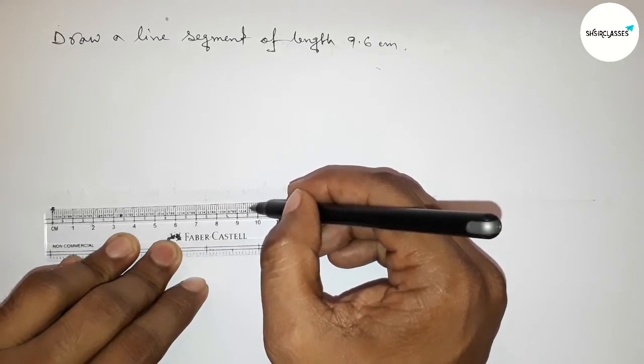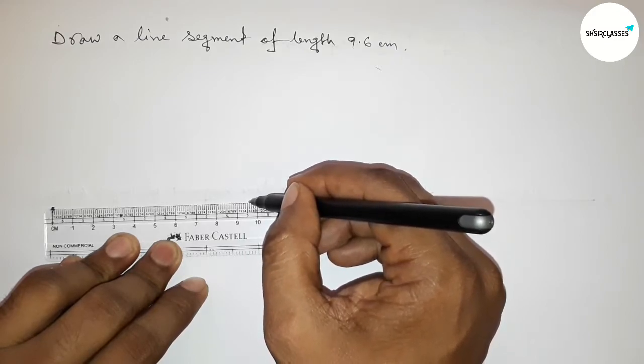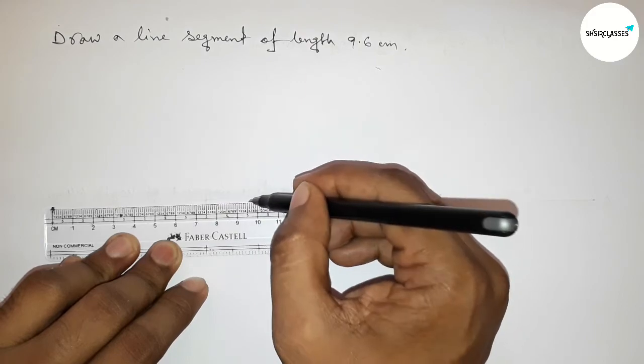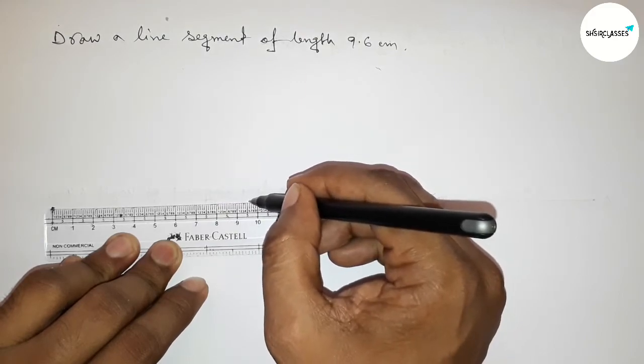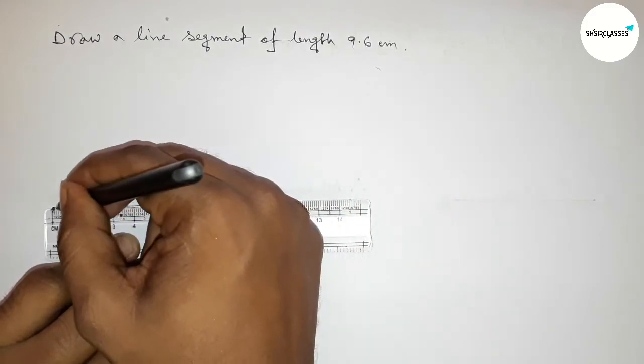And this is nine point six. Okay, so marking the line at nine point six centimeter length and joining the line.